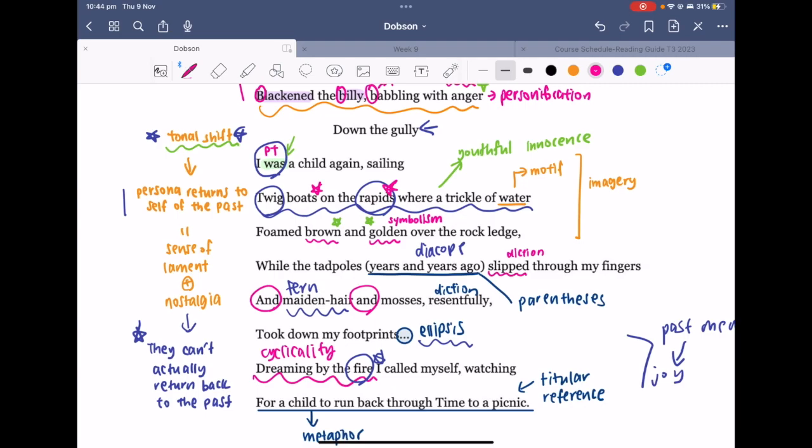You could also make note of the diction of "resentfully" here that captures this idea of lament and yearning, as well as the ellipsis here—the dot dot dot—that reenacts the trailing off of the persona as they reflect upon the nostalgic memories of the past that they'll never be able to literally return back to.